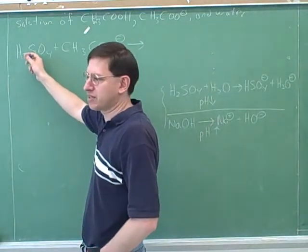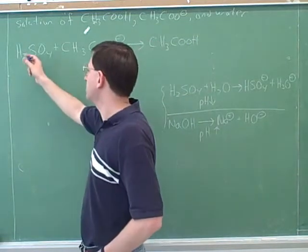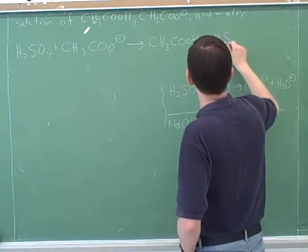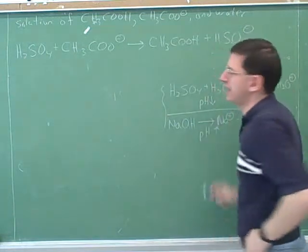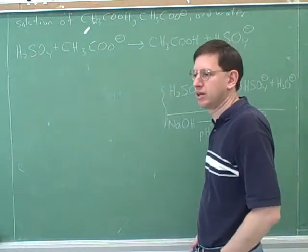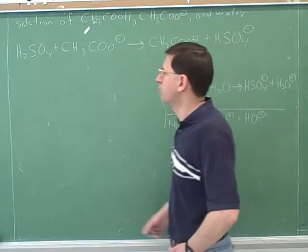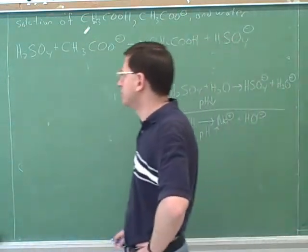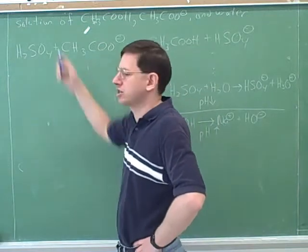The sulfuric acid protonates the acetate. After the acetate gets protonated, it becomes neutral — acetic acid. And after the sulfuric acid deprotonates, it becomes negative. Will this reaction go to completion or to equilibrium? It goes to completion because one of the starting materials is a strong acid. If any starting material is a strong acid or a strong base, the reaction goes to completion.